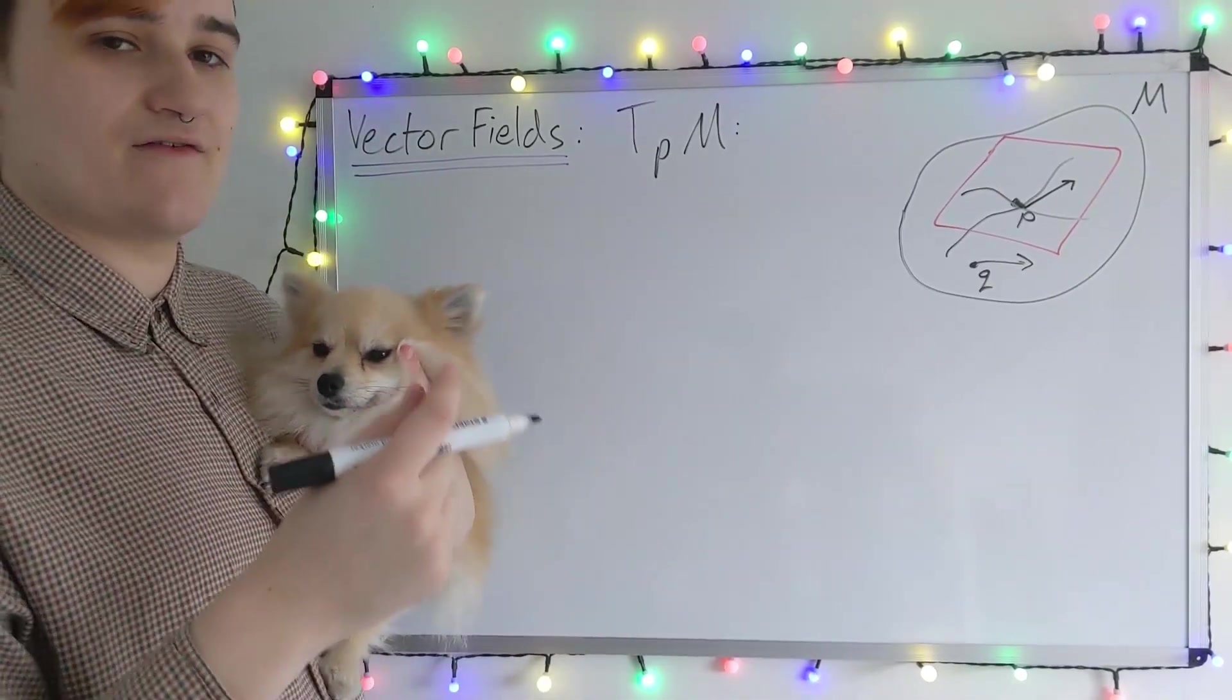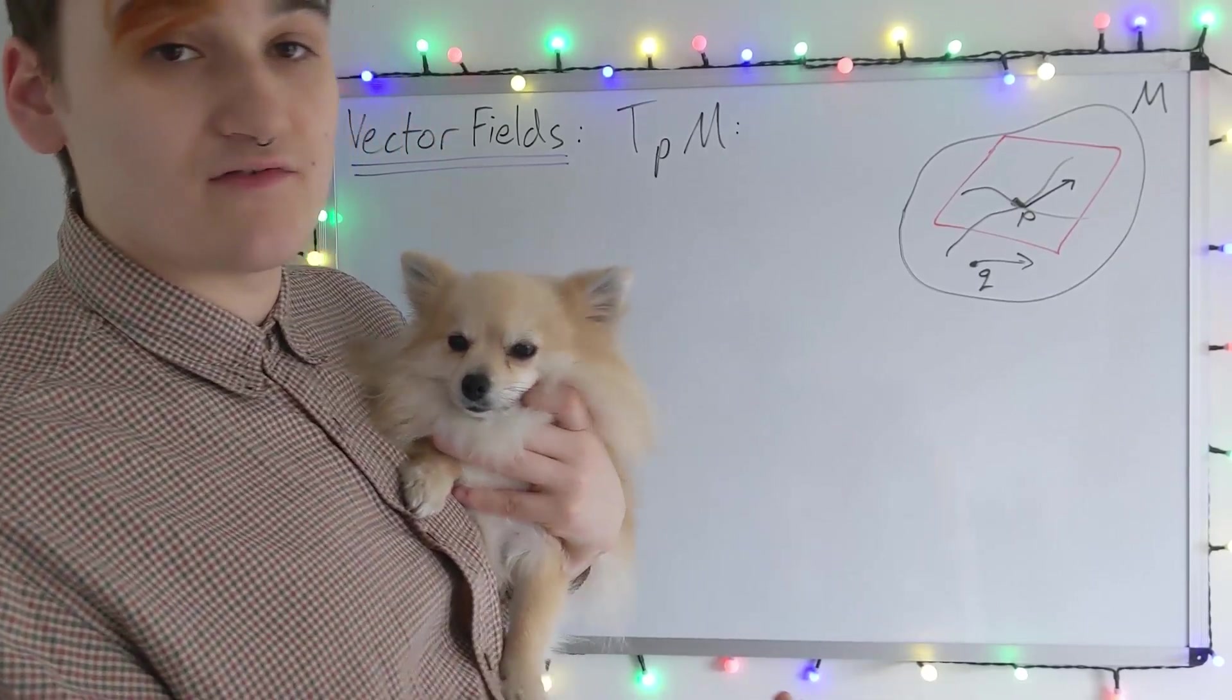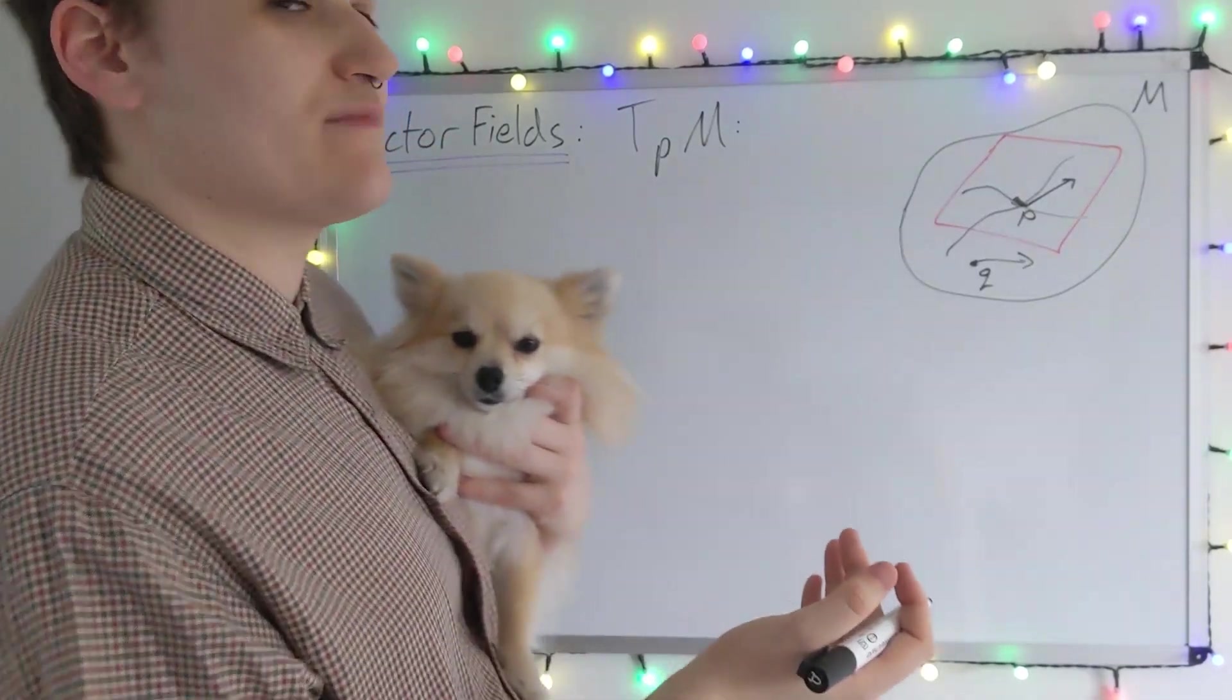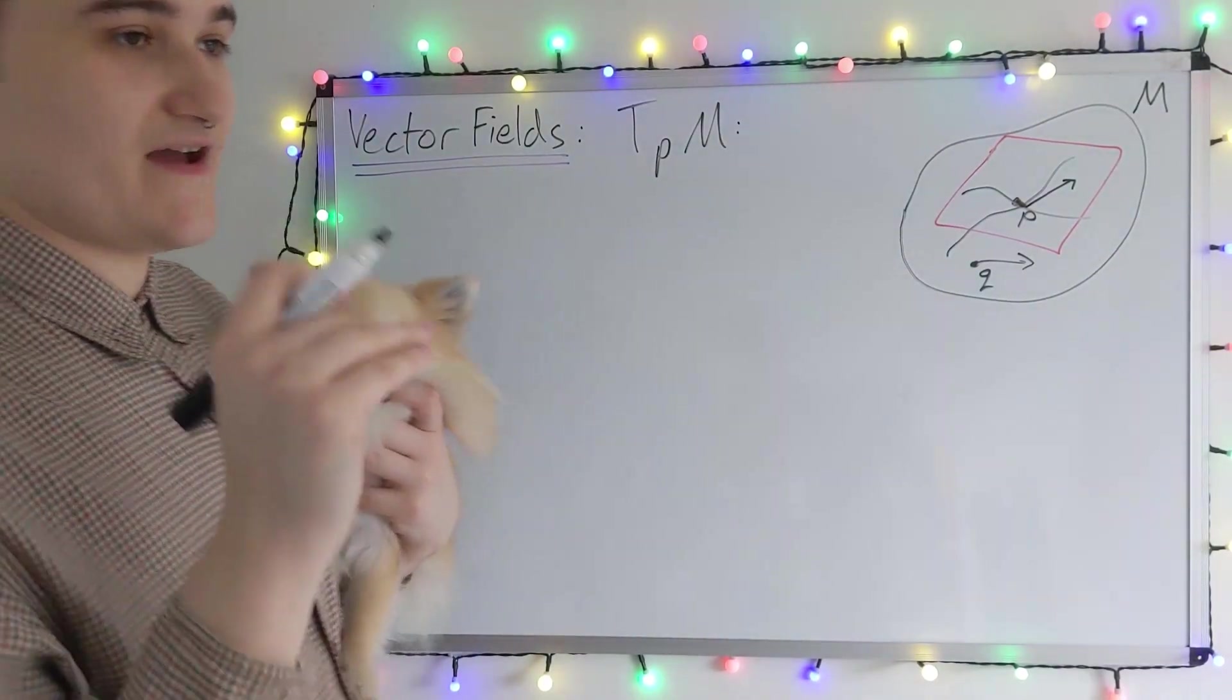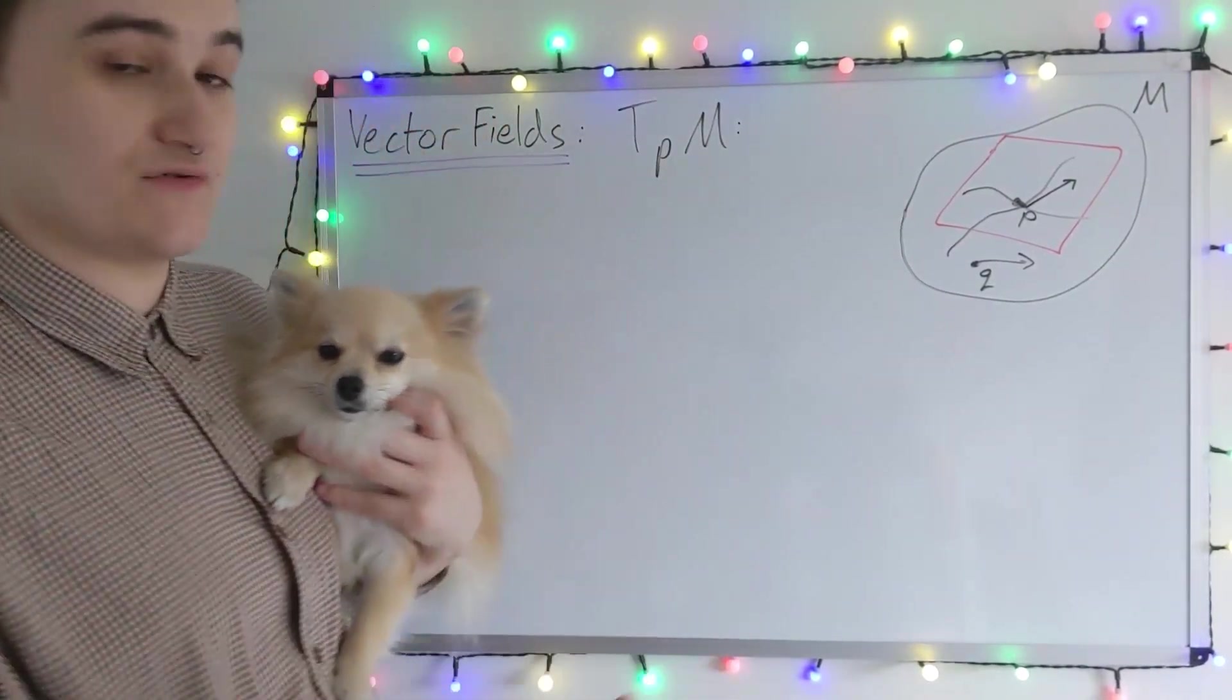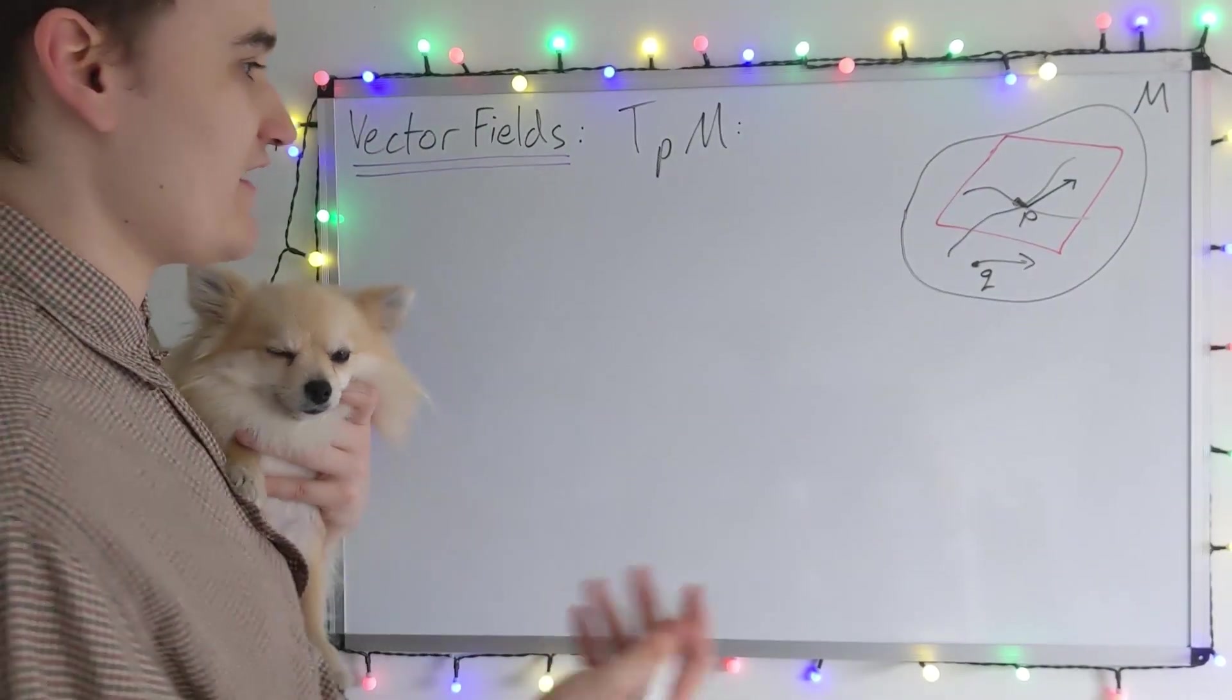If you'll remember, if we have two charts that overlap, the charts need to agree on the overlap region. Well, it's the same when we're trying to define a vector field. Any vectors that lie in two overlapping charts, they have to agree. This is schematically how we define a vector field.